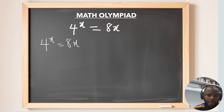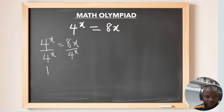To proceed further, the first step is to divide both sides by 4 to the power of x. On the left-hand side, we get 1 equals 8x divided by 4 to the power of x.